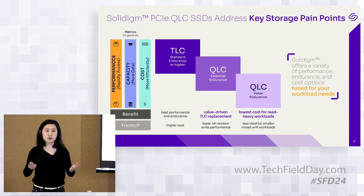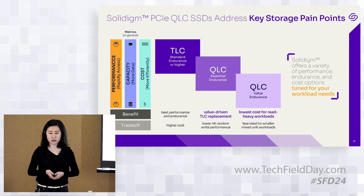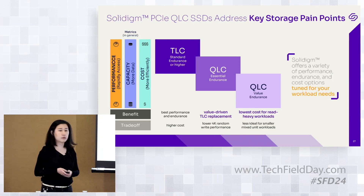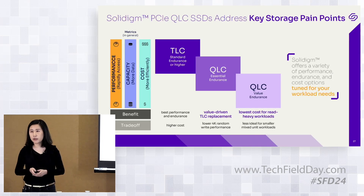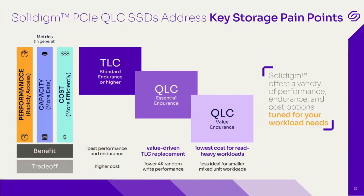How do you compare these three products? First, on performance, there are four performance corners we usually use to categorize an SSD: sequential write, sequential read, random read, and random write. The biggest difference between a floating gate QLC and TLC SSD is on the random write performance.